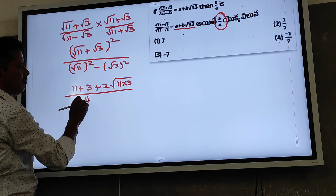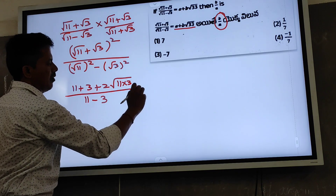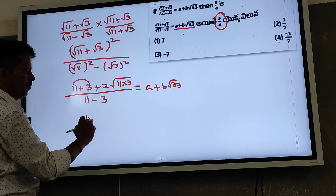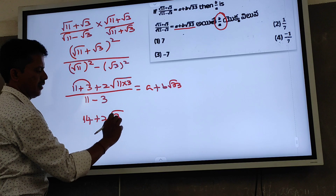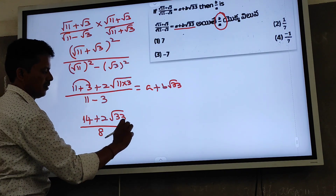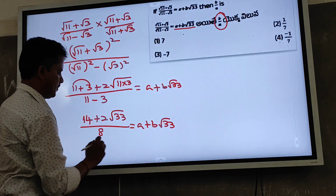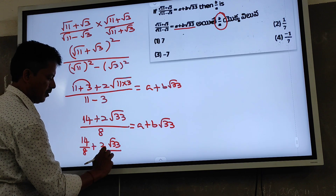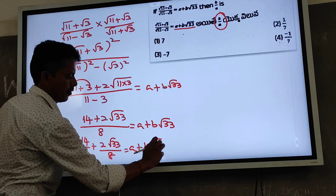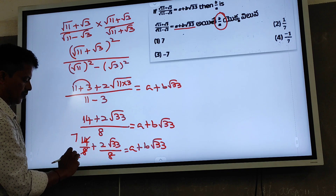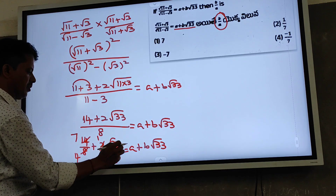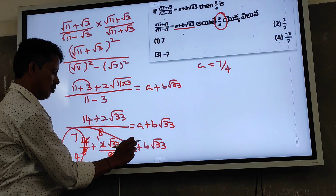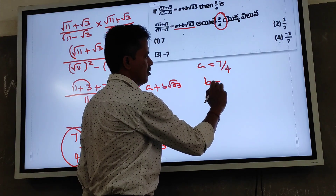The denominator becomes (√11)² − (√3)² equals 11 − 3 equals 8. The numerator is (√11 + √3)² equals 11 + 3 + 2√(11×3) equals 14 + 2√33. So (14 + 2√33)/8 equals 14/8 + (2/8)√33 equals 7/4 + (1/4)√33. Comparing with a + b√33: a equals 7/4, b equals 1/4.